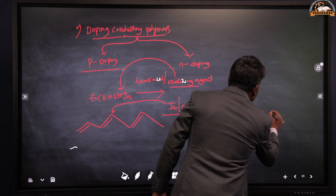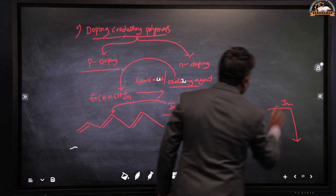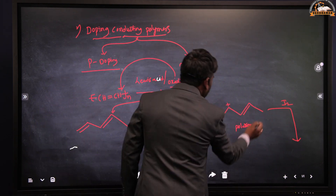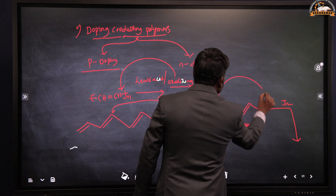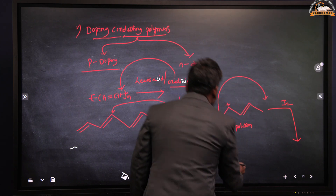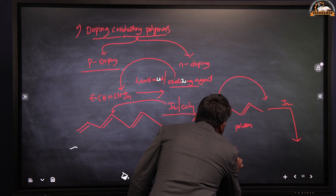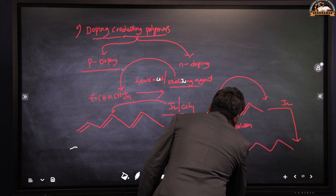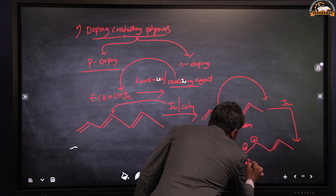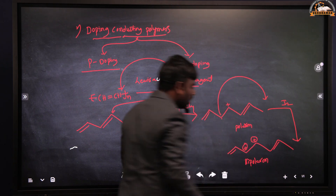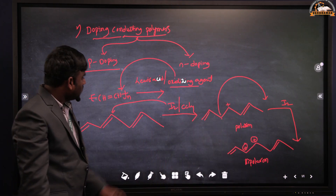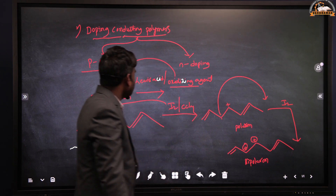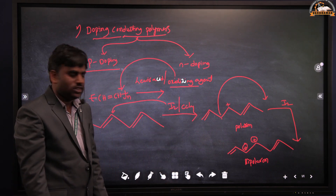Adding the oxidizing agent one more time — again, it takes an electron from the polymer chain, and one more positive charge forms — a bipolaron. In this way, charges are forming while adding the oxidizing agent or Lewis acid.